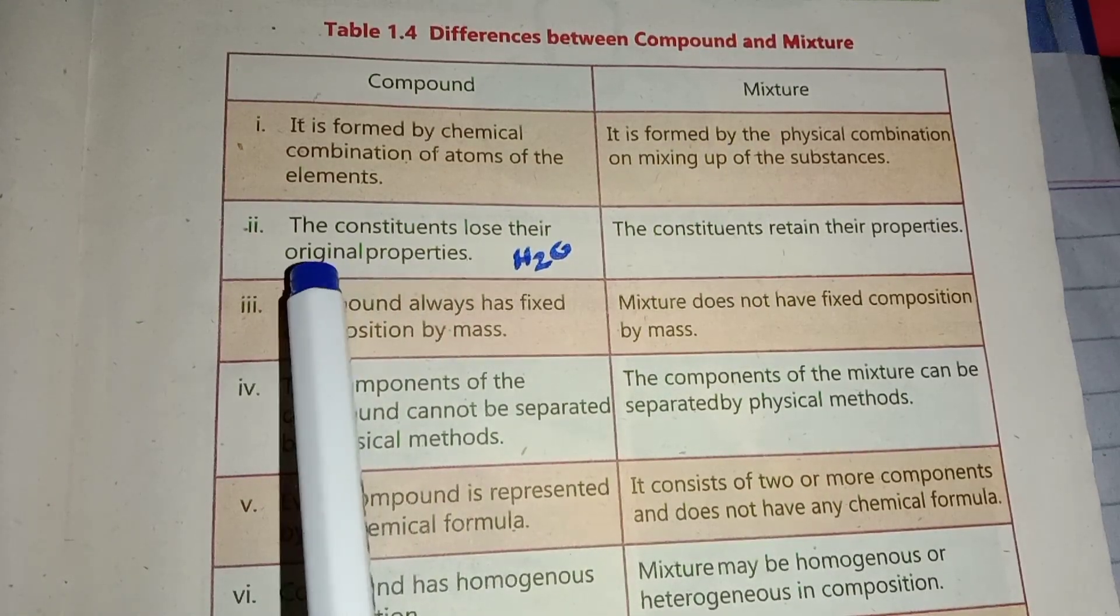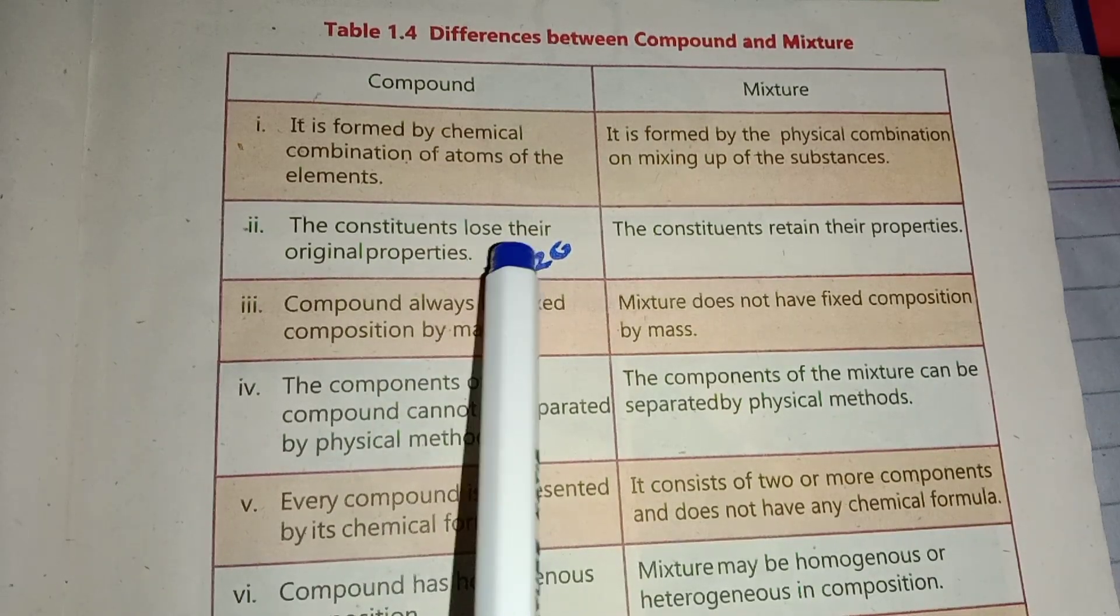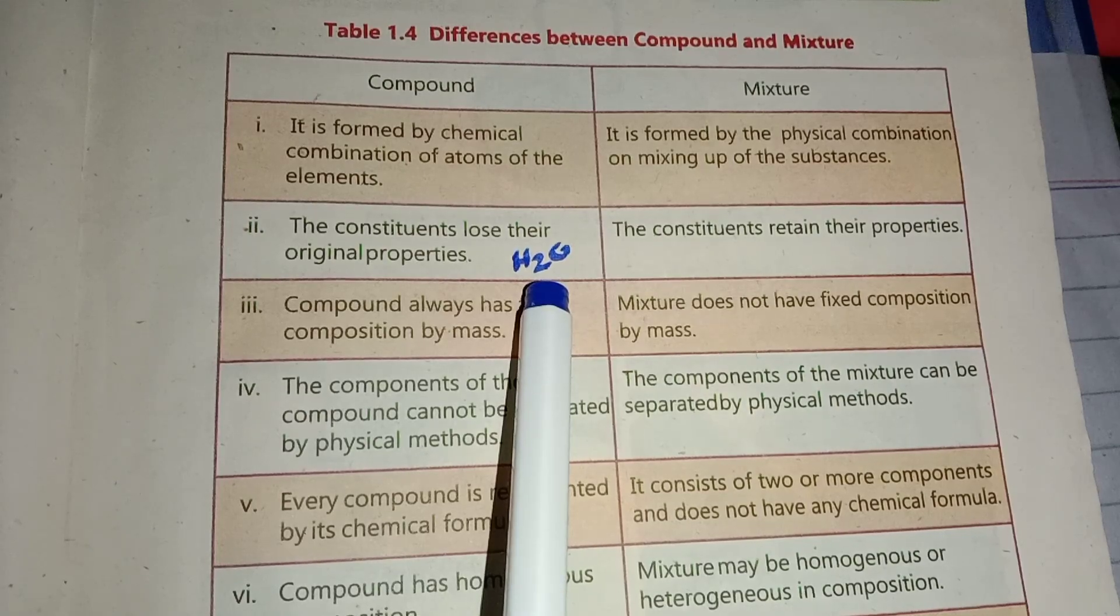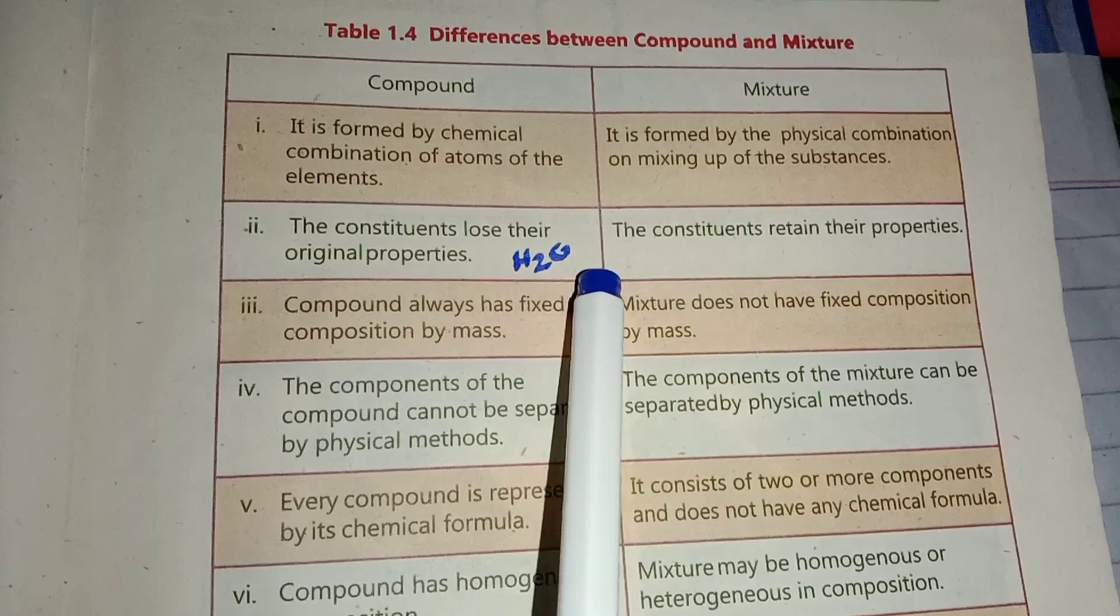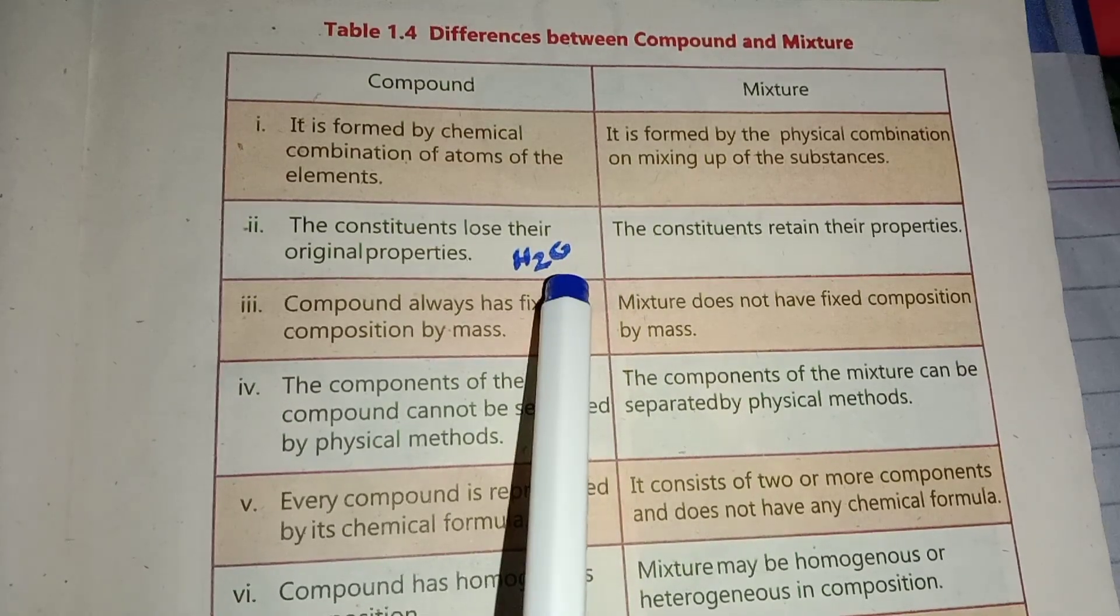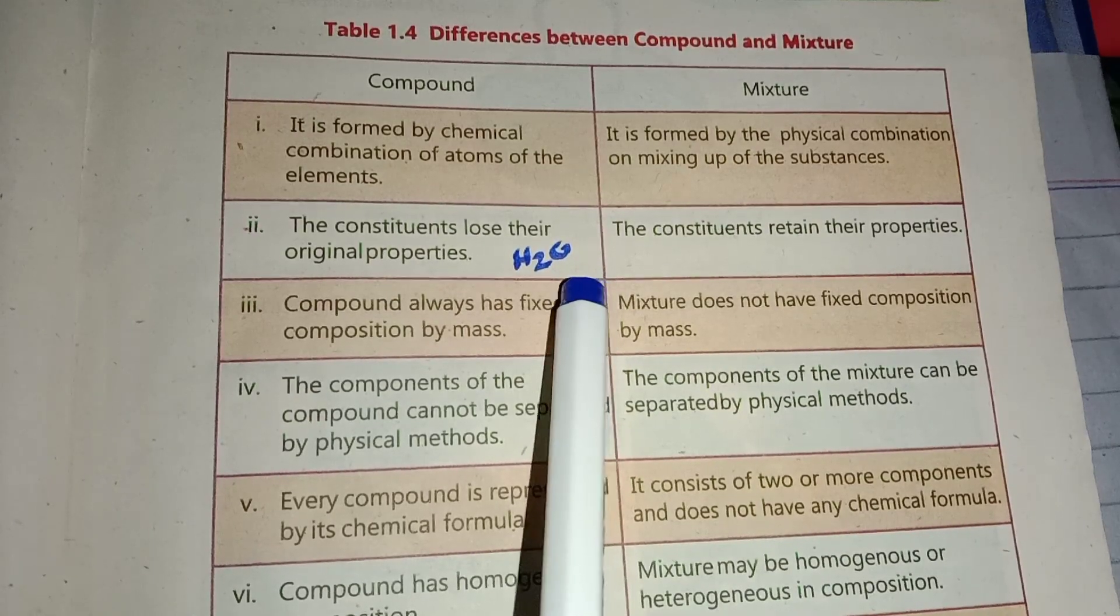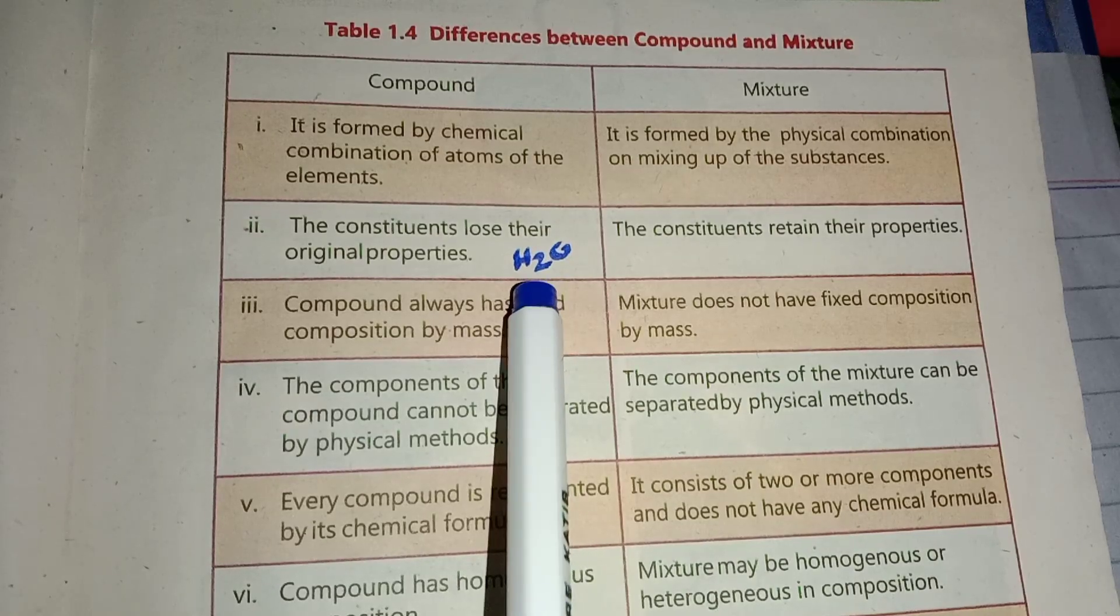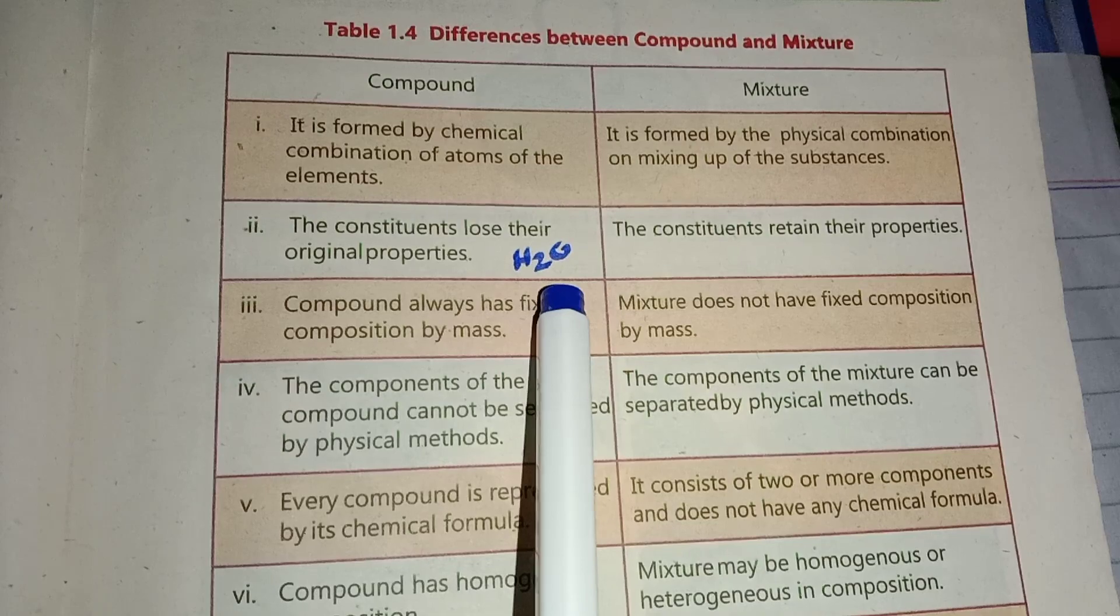The constituents of compounds lose their original properties. For example, Hydrogen gas and Oxygen gas are gases, but when combined they form H2O - water, which is a liquid. The properties are lost and a new product forms.